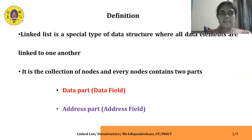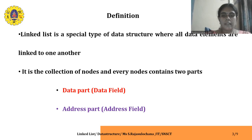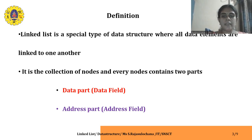A linked list is a linear data structure which consists of two fields. If it is a singly linked list, it will consist of only two fields: a data field and an address field. A linked list consists of a series of nodes, and each node is connected by means of pointers. Each node will consist of a data field and an address field. The data field holds the value, and the address field holds the address of the next node in the list.